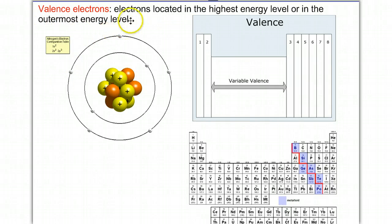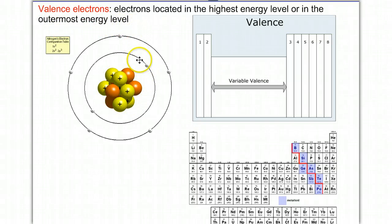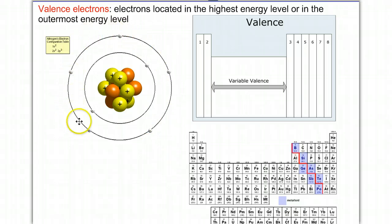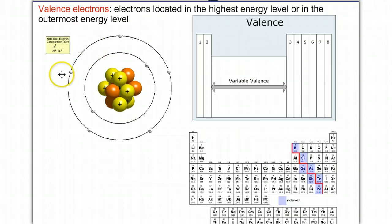Let's start with valence electrons. You should know that they are the electrons located in the highest energy level, or in what's called the outermost energy level of an atom. Here we have an example of nitrogen where it has two inner electrons and five outer electrons. Because these electrons are on the outermost energy level, they're exposed to other elements and atoms, and therefore those are the electrons that can either be gained, lost, or shared. So nitrogen has five valence electrons.